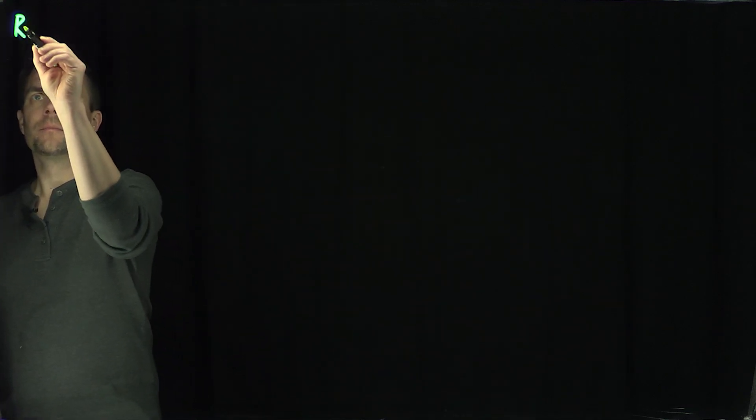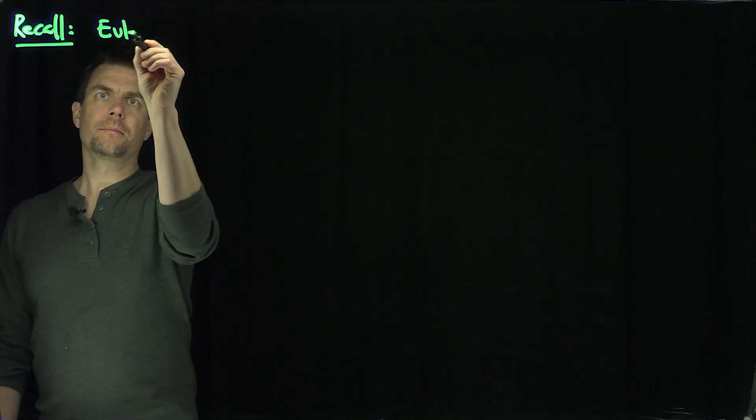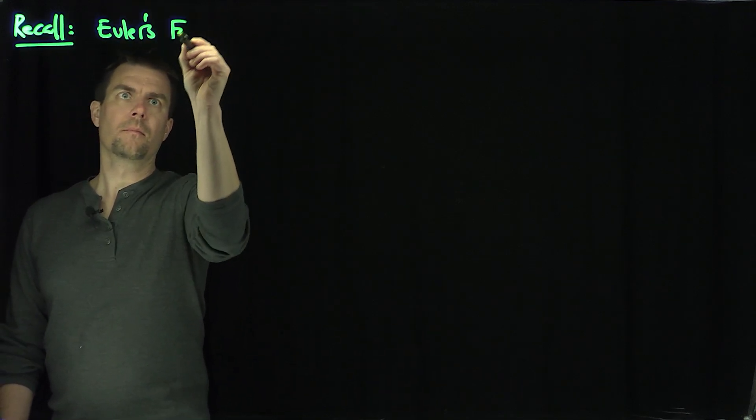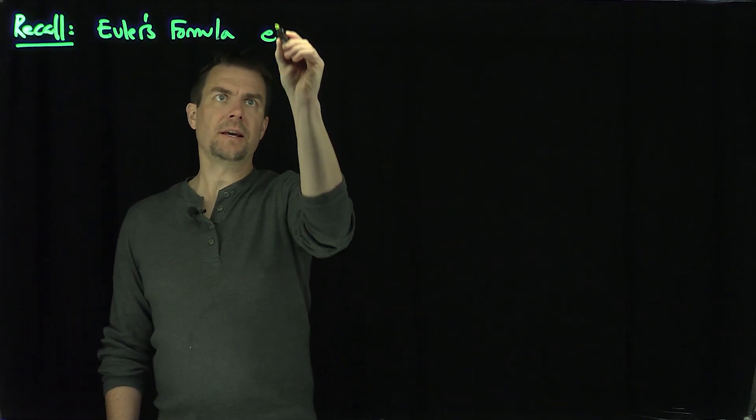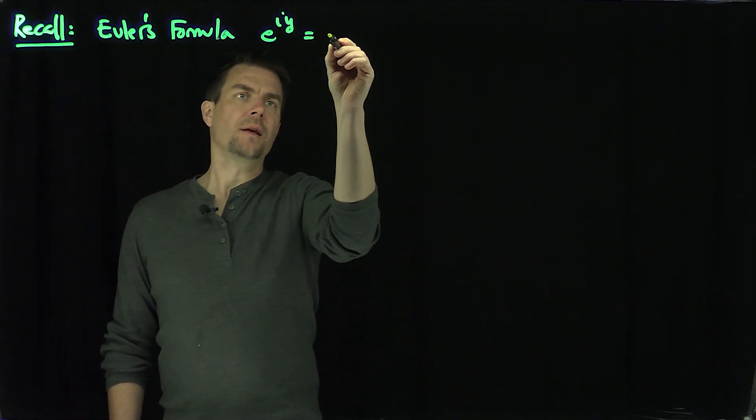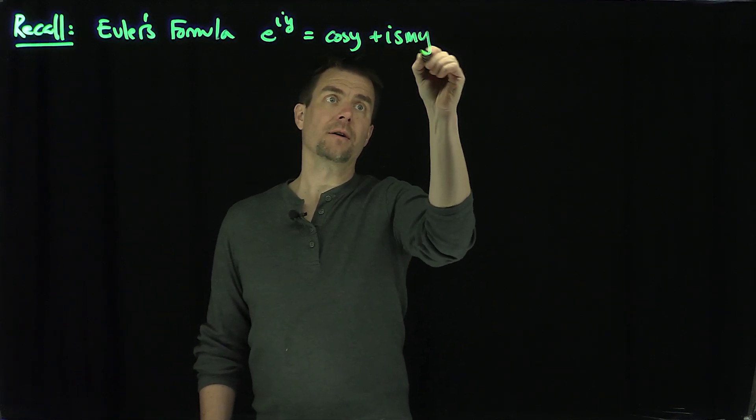In this video we'll move on to exponential and complex sine and cosine functions. Let's recall Euler's formula tells us that e^(iy) is the cosine of y plus i times the sine of y.